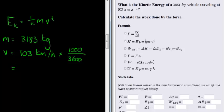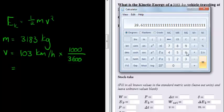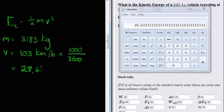What do we get? We get 103 times 1,000 divided by 3,600, which gives us 28.61 meters per second. That's our velocity.